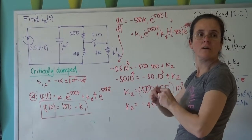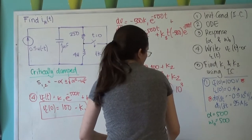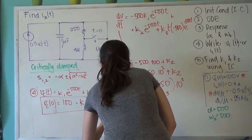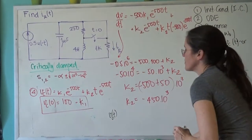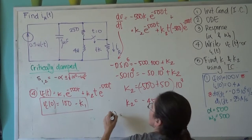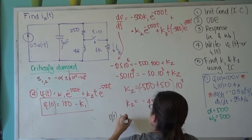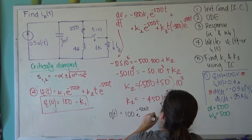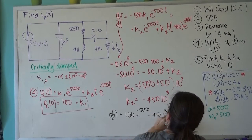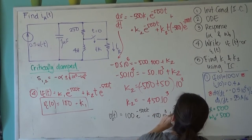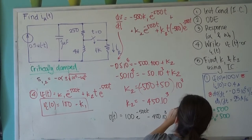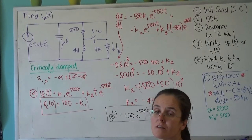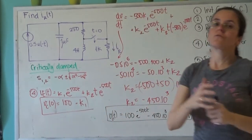I'm going to write in black the final voltage on the capacitor, which is: Vc(t) = 100·e^(−500t) minus 450×10³·t·e^(−500t) volts. Note that this is just the voltage on the capacitor. In the next video, I'm going to write the final answer to the full problem.